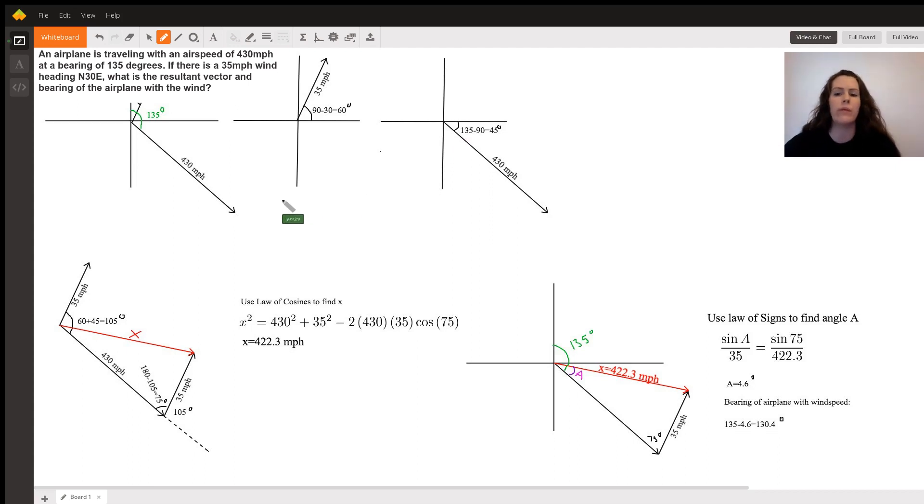Now the reason why we want to do that is we want to know what the angle is between our two vectors once we put them together. So as we scroll down to this fourth picture, we put the vectors together now on our xy-coordinate.